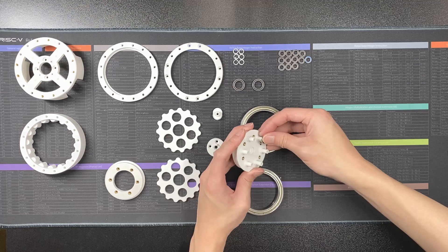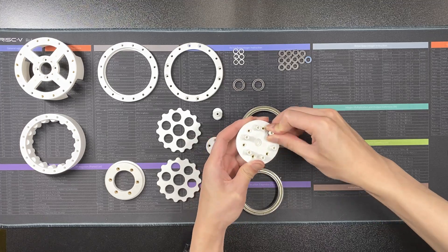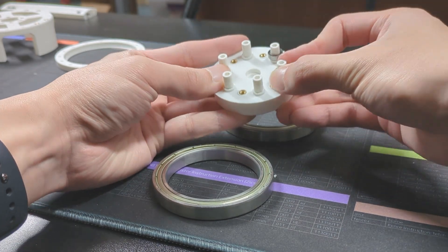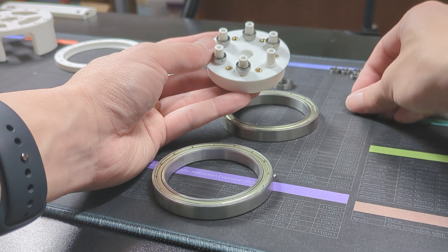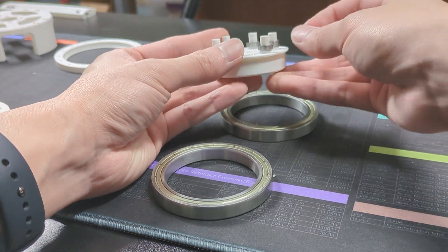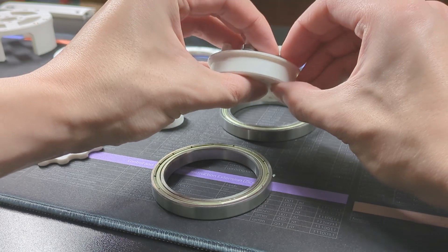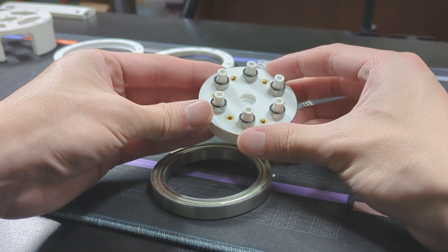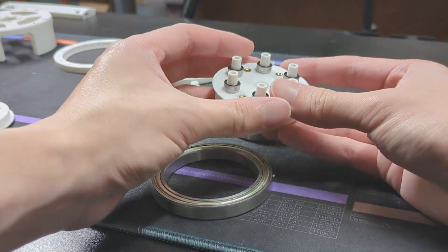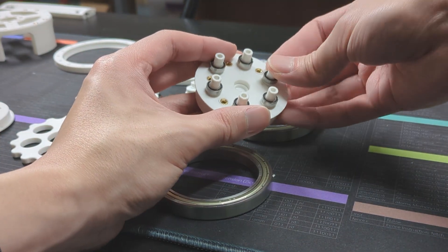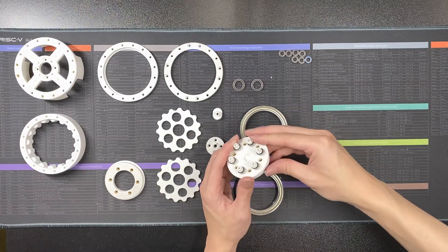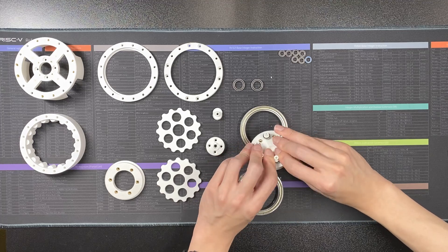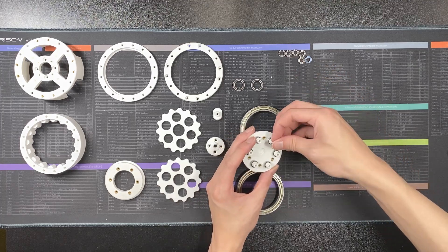To assemble the core of the gearbox, push the bearings onto the output shaft, and then assemble the other set of bearings.